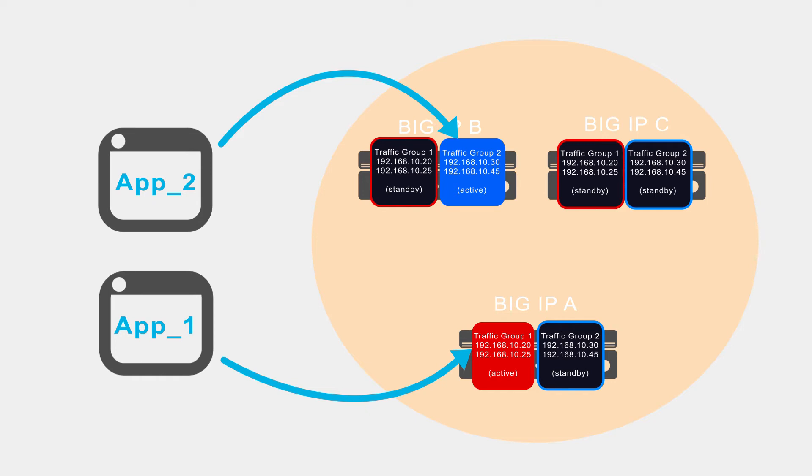One thing to note: when you create a traffic group, the device you create it on is the device that the traffic group will initially be active on, but you can explicitly tell the traffic group to be active on a different device.